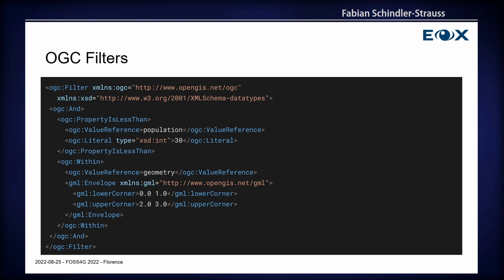There are a couple of filtering standards. For example, we have the venerable OGC filters, which are XML-based. You can see here, this is how you would define a compound filter. You have the AND filter keyword. Here you compare a property with a specific value that you provided. And you can also make a spatial query with some envelope, and then you would combine them all with the AND keyword. So this is XML-based — it's rather heavy-handed and verbose, as you can see.